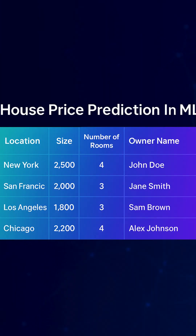Let's take a simple example: a dataset for predicting house prices. Each row here is a house, and the columns are the features or inputs we have. Suppose there are features like location, size, number of rooms, owner name, and paint color. Now, not all of these features are equally useful for our prediction.